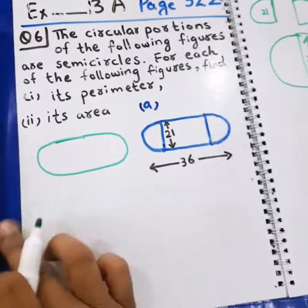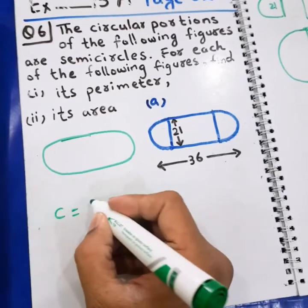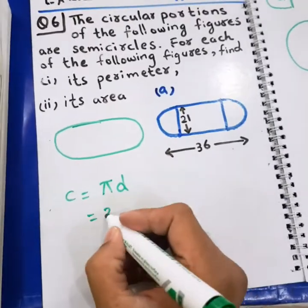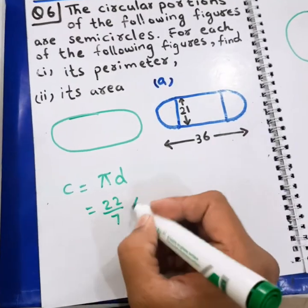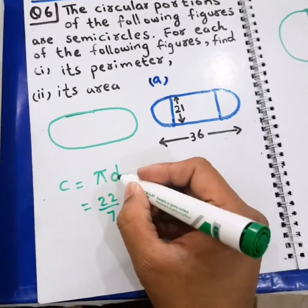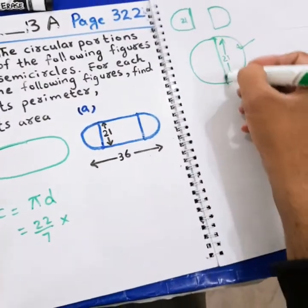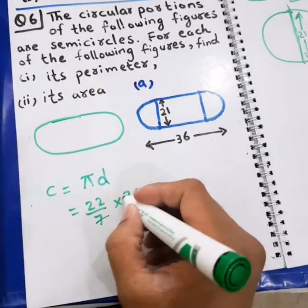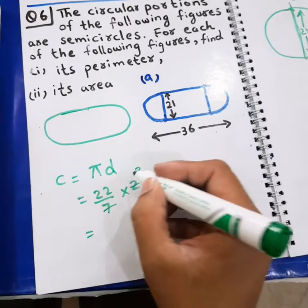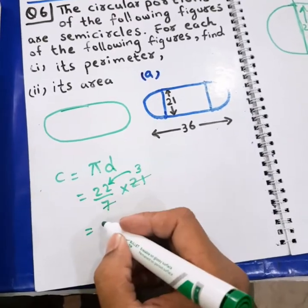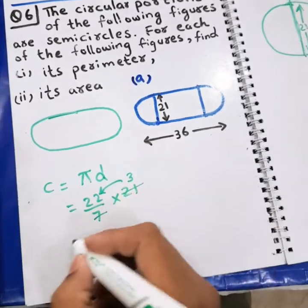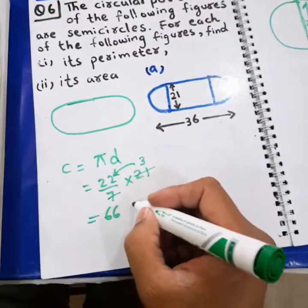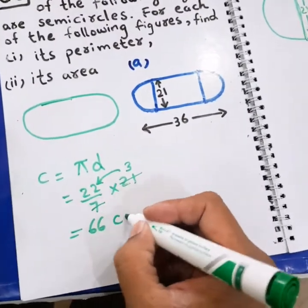The formula for circumference is C = πd. In place of π I shall write 22/7, and in place of d I shall write 21, since that is the diameter of the circle. 21 divided by 7 gives 3, and 22 times 3 gives 66. So the circumference is 66 centimeters.